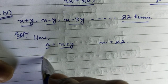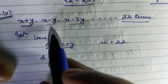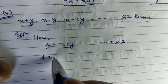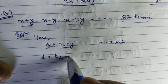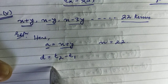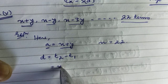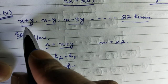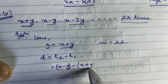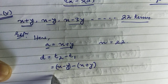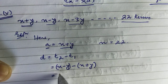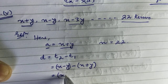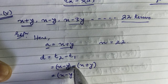Now we need to find the common difference. The common difference is equal to the second term minus the first term — that is t2 minus t1. The value here is: the second term is x minus y, then minus the first term which is x plus y.